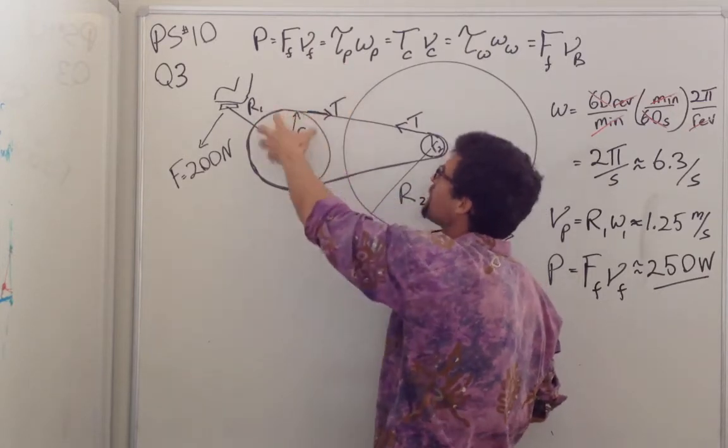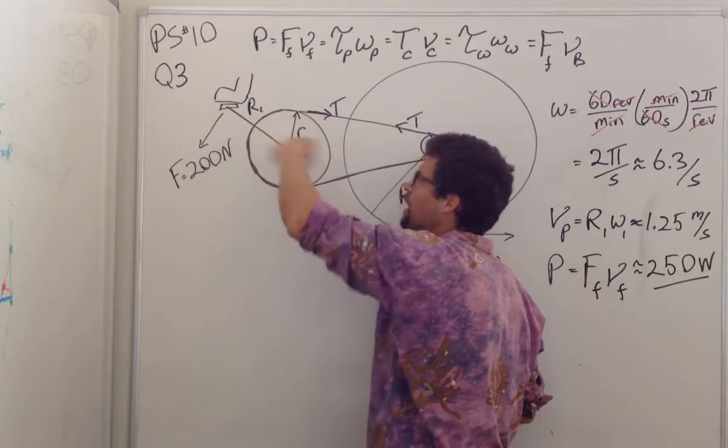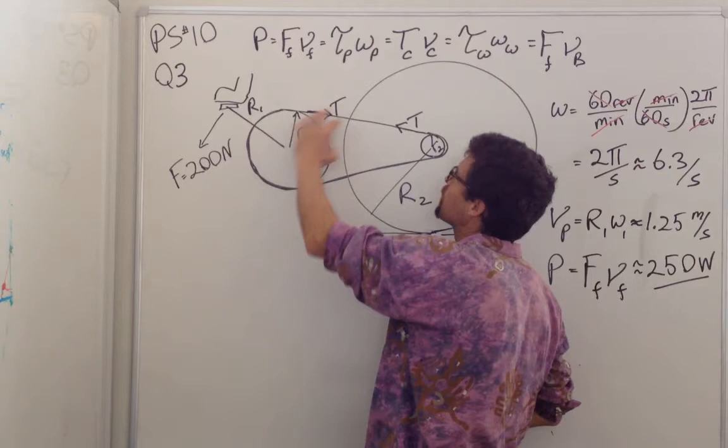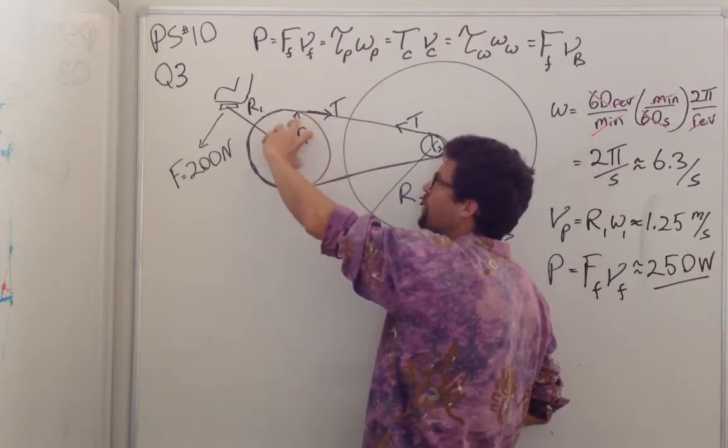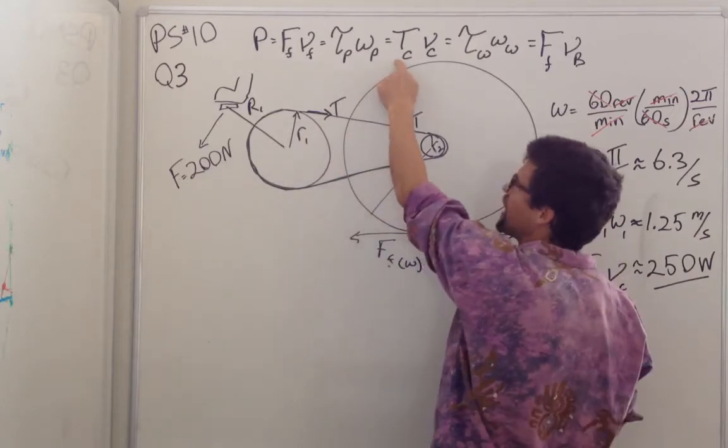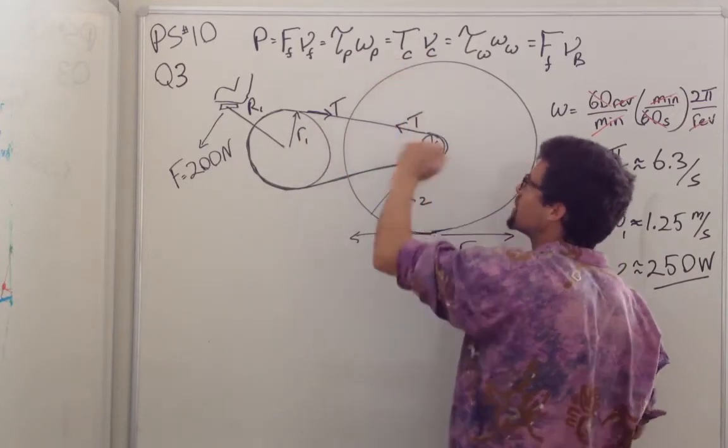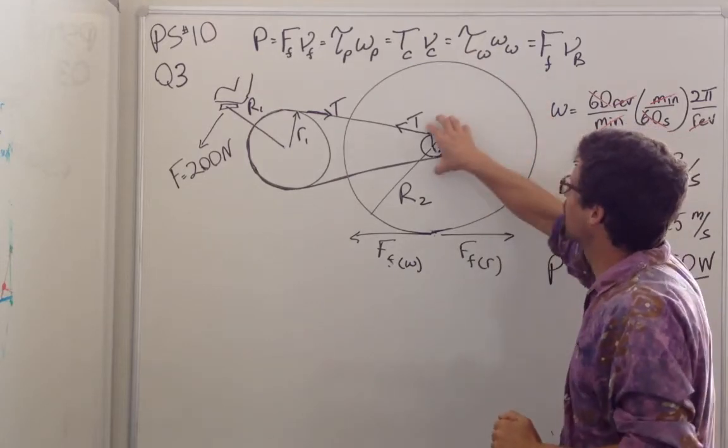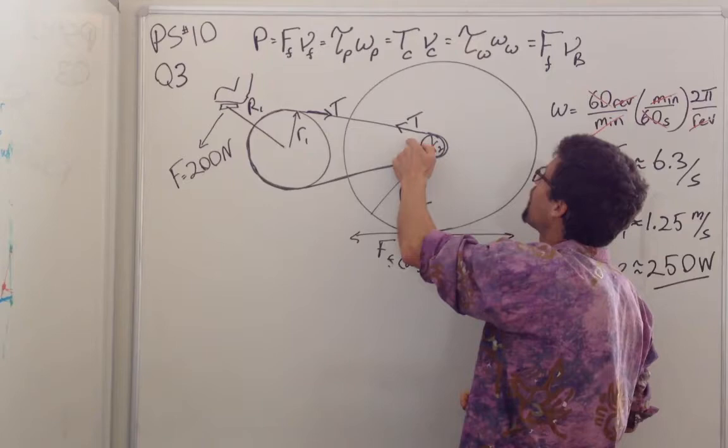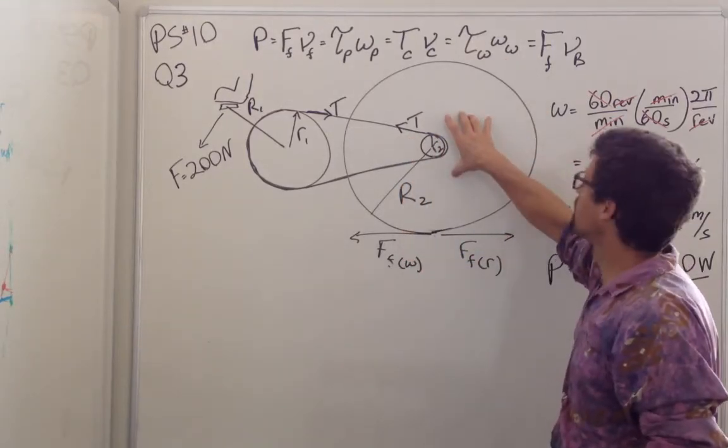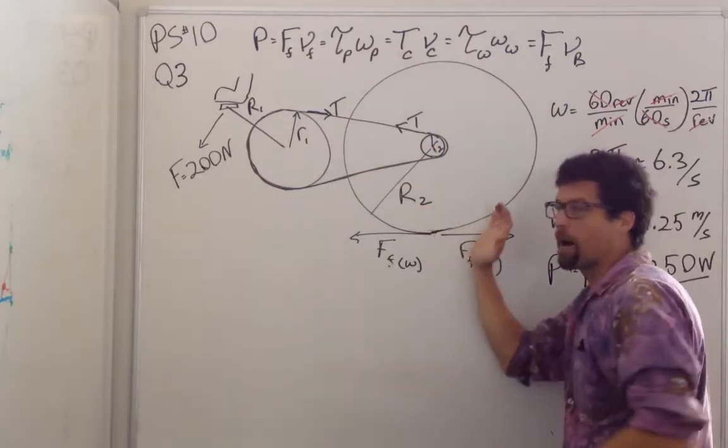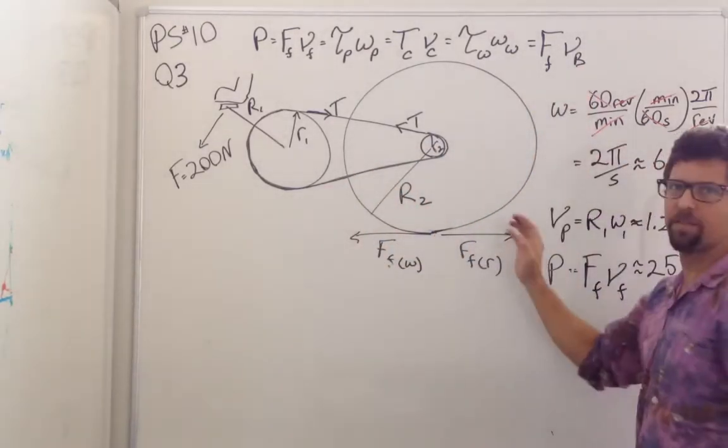This is the torque of the pedals times omega of this hub. So the power provided by the feet are equal to the power transferred in the hub, which is equal to the power transferred by the chain, which is the tension in the chain times the speed of the chain, which is equal to the power transmitted to the back wheel, the torque provided to this wheel by the chain times omega of the back wheel, which is the power provided to the bicycle: the force on the bike pushing it forward times the speed of the bike.